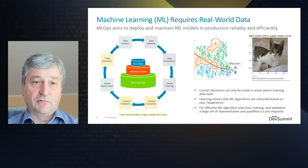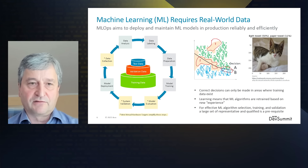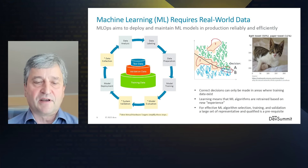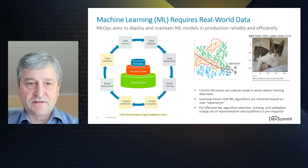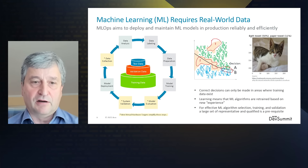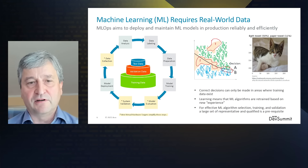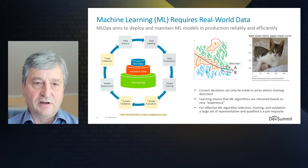Now let's go to machine learning. One of the challenges is it requires real-world data, and the steps to maintain this real-world data and to deploy a new model and verify and validate it is called MLOps. You see in this circle all the steps needed to maintain the data sets for machine learning applications, and these applications need checking in the final target system — called model evaluation and system validation in this diagram. With ARM Virtual Hardware Targets, these two steps can be simplified and put into the cloud system, since most of the machine learning steps are anyway in the cloud.